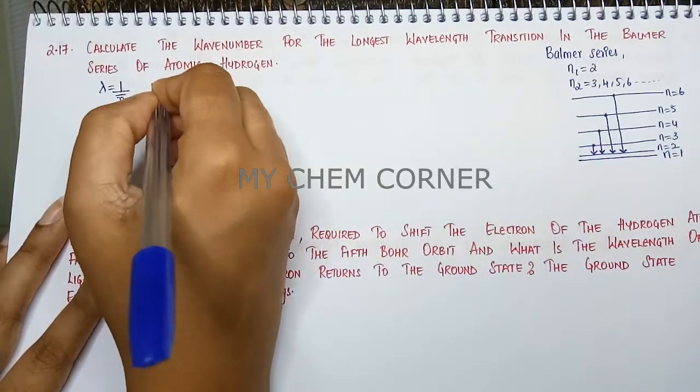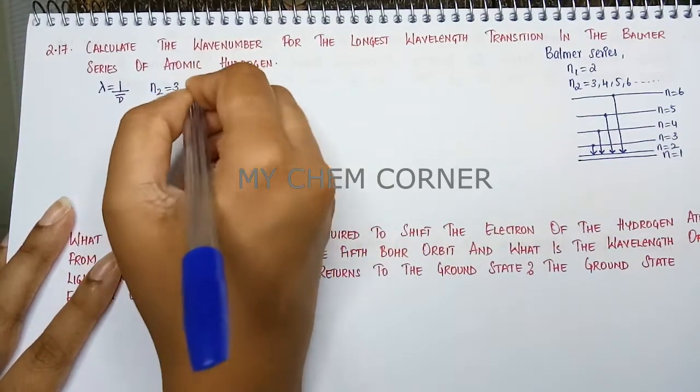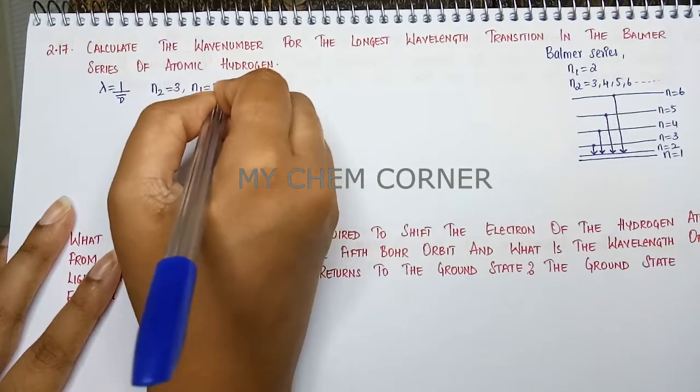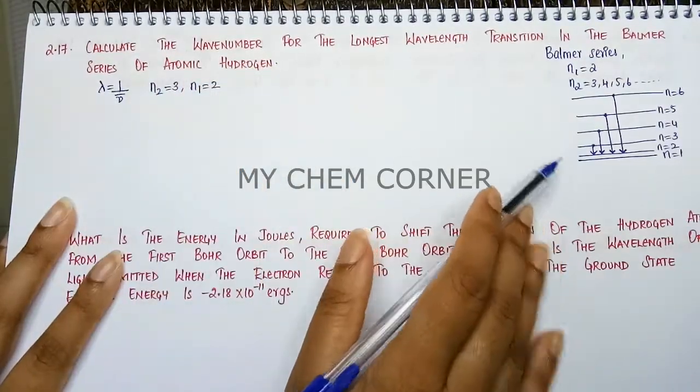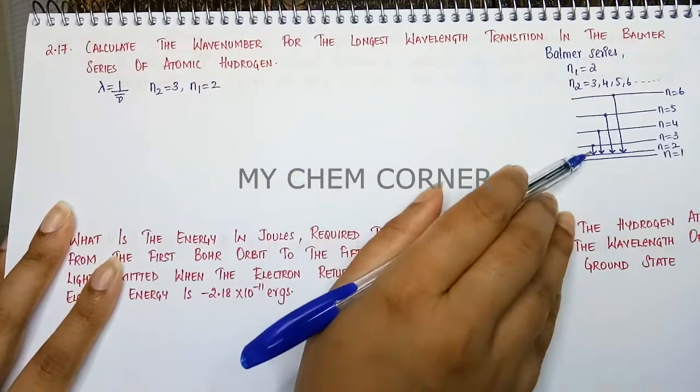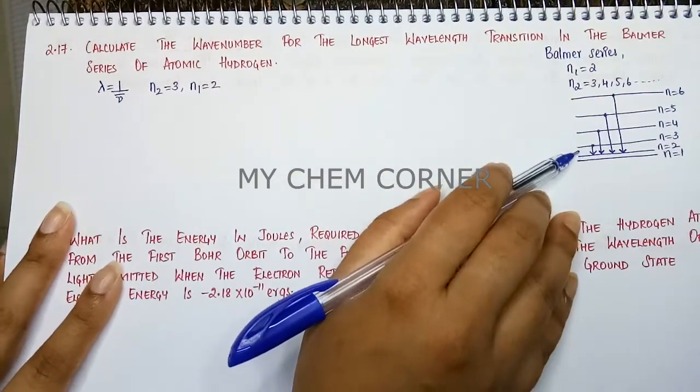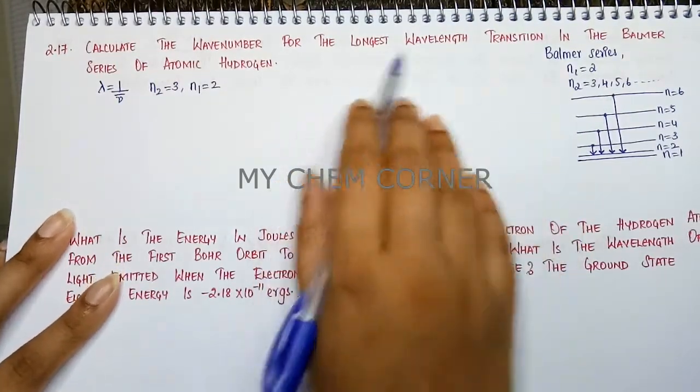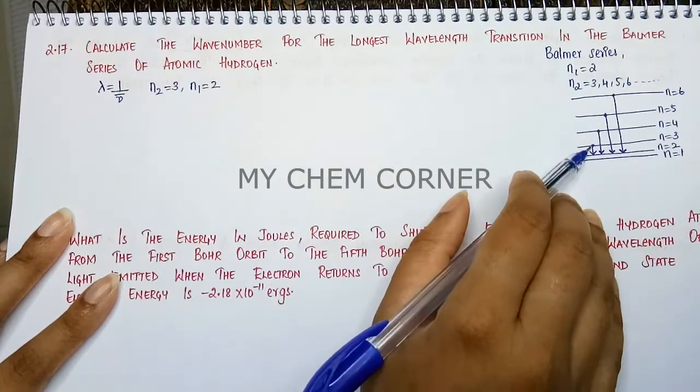So here we will write that N2 equals 3 and N1 equals 2. That is the shortest wave you can find because when you say shortest wave, its wavelength is the highest, longest wavelength. So longest wavelength is the one where the transition is the lowest.